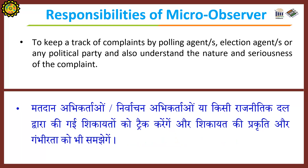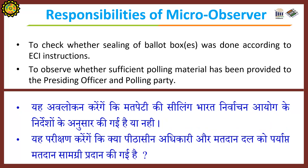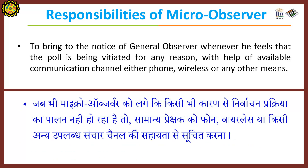Additional responsibilities include keeping track of complaints by polling agents, election agents, or any political party and understanding the nature and seriousness of each complaint, checking whether the sealing of the ballot box was done according to the Commission's instructions, observing whether sufficient polling material has been provided to the presiding officer, and bringing to the notice of the general observer whenever the poll is being vitiated for any reason, using available communication channels such as phone, wireless, or any other means.